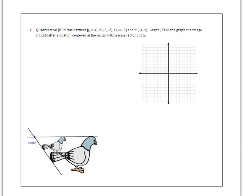Number one, quadrilateral JKLM has these vertices. Can you graph JKLM and graph the image of it after a dilation centered at the origin with a scale factor of 2.5? So I would like you to pause the video and please graph JKLM, label them and connect them.